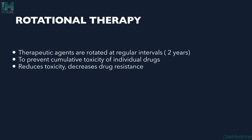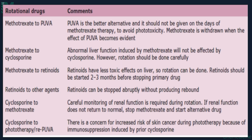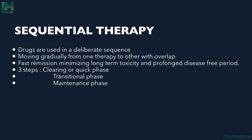In rotational therapy, therapeutic agents are rotated at regular intervals — after a gap of 1 to 2 years — to prevent cumulative toxicity. For example, methotrexate has a maximum cumulative dose of 1.5 grams in patients with comorbidities, or 3 to 4 grams otherwise. Rotating drugs reduces toxicity and decreases drug resistance. You can rotate from methotrexate to PUVA, or from methotrexate to cyclosporine, since methotrexate has hepatic side effects and cyclosporine has renal side effects.